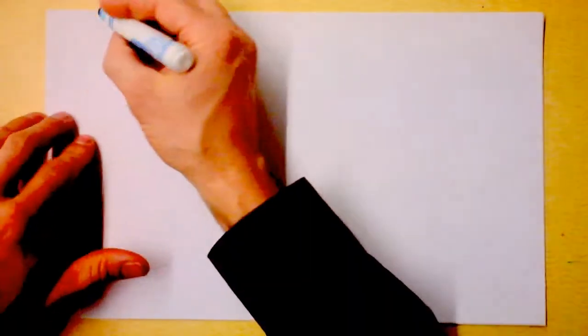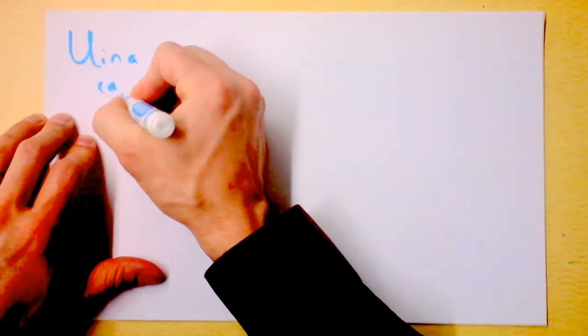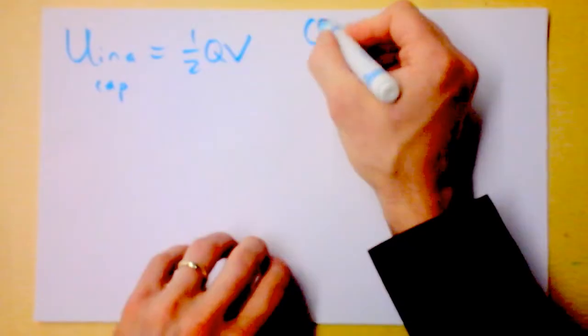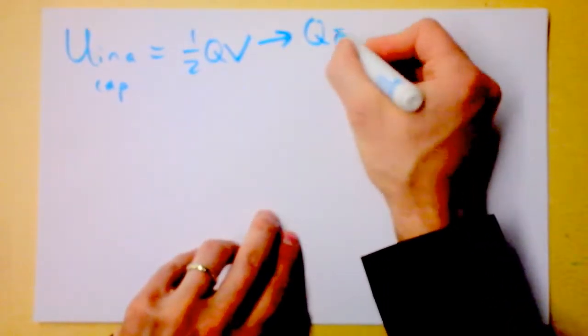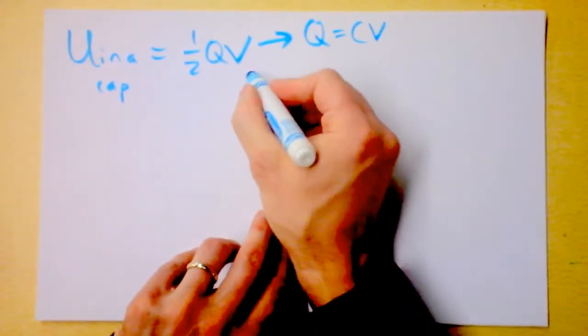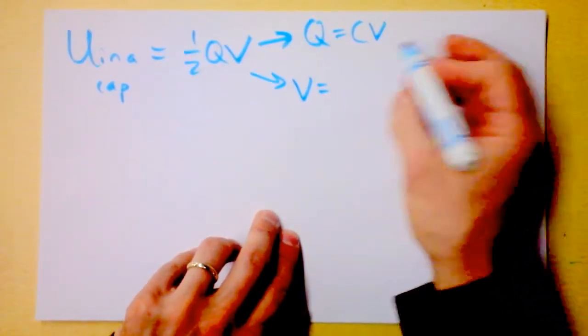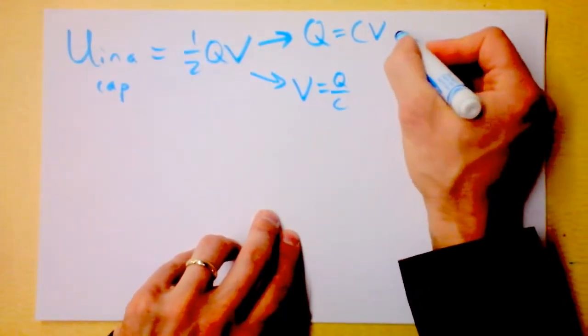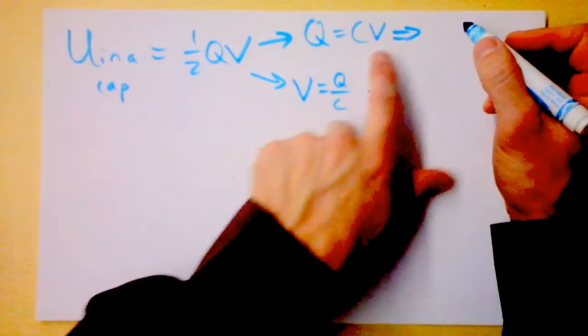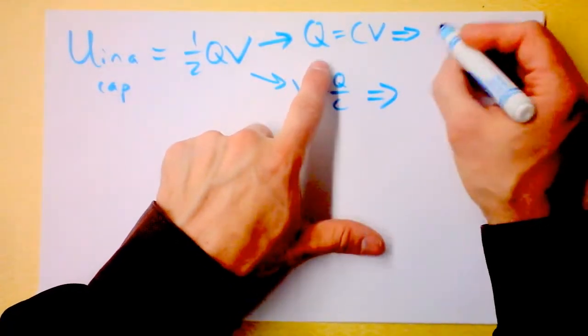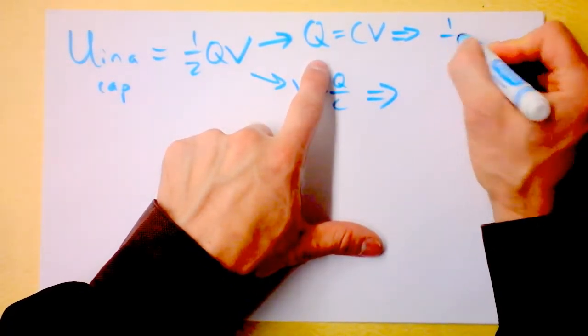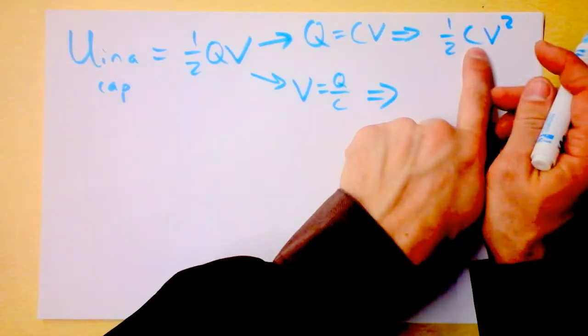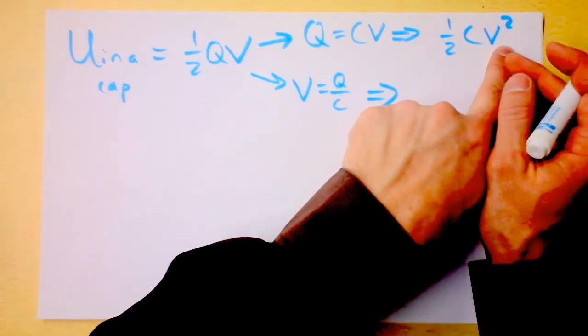Let us get that equation up here where it's a little bit cleaner. U in a cap, 1 half Q times V. I remember that Q is equal to C times V. Doing this gives us this equation. I'm going to get C and a V squared. So that says 1 half C V squared. That's a very useful way to look at the energy stored in a capacitor. It's the capacitance times the voltage on the capacitor squared. So if I double the voltage on a given capacitor, I'm storing 4 times as much energy.